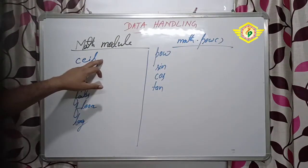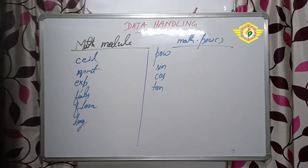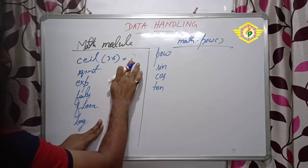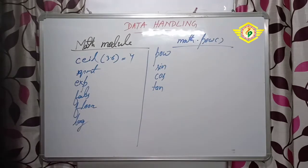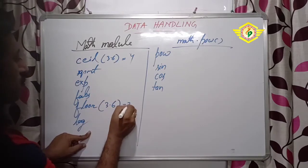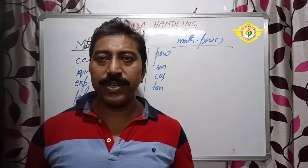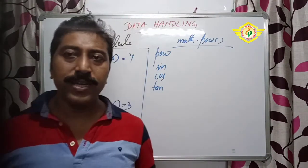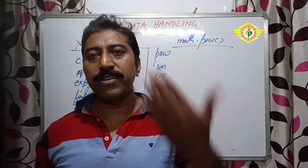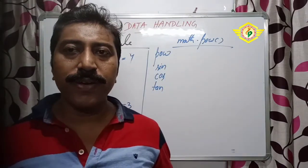First one is ceil. The ceil function returns the smallest integer but not less than that number. One example - ceil(3.6), the output will be 4. And one is floor - floor(3.6), the output will be 3. Ceil means the higher one and floor means the lower one. So when ceil value means higher value - 3.6 is there, it will come 4. 3.6 floor we take, we get 3 means the lower value.